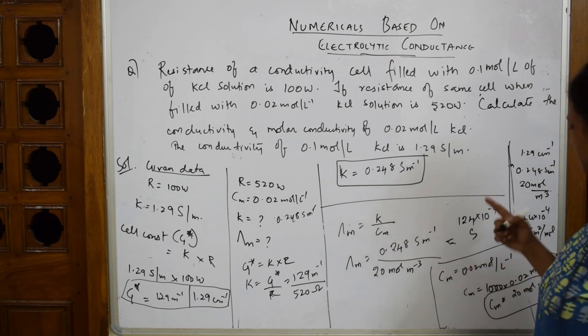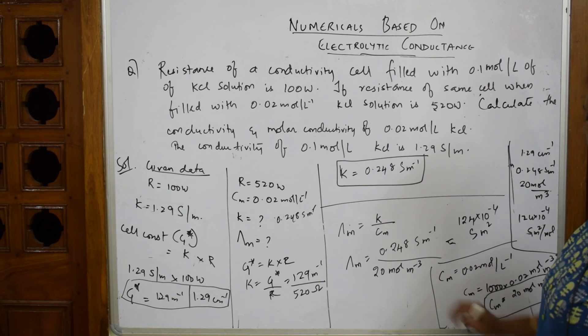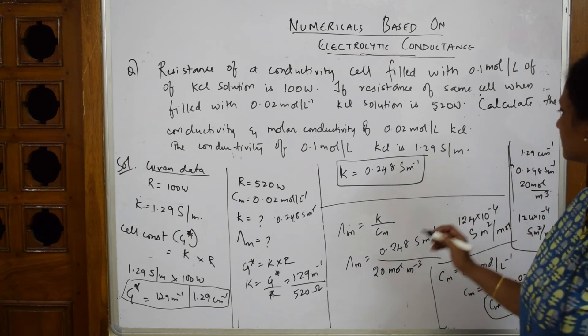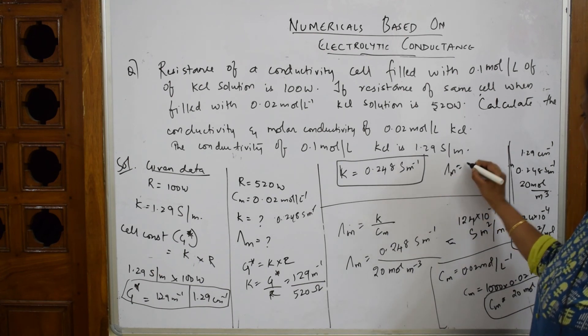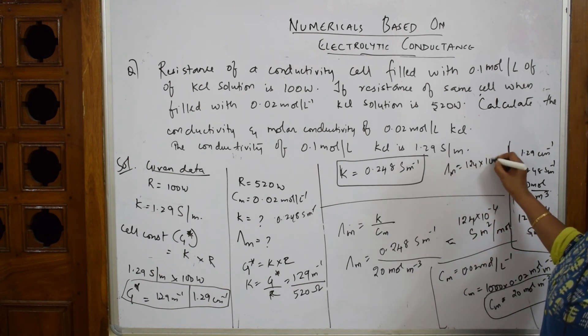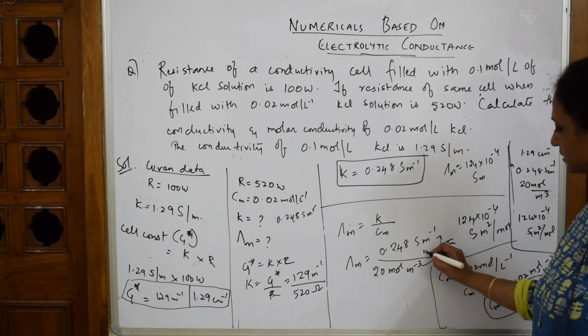The molar conductivity answer is 1.24 × 10⁻² Siemens meter squared per mole. The exponents work out: meter⁻³ and meter⁺¹ give meter⁻².